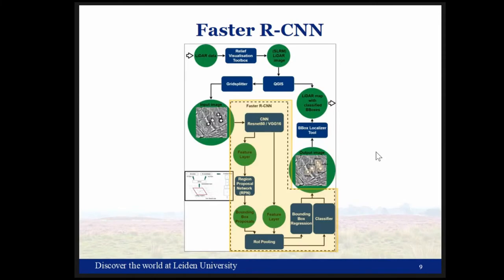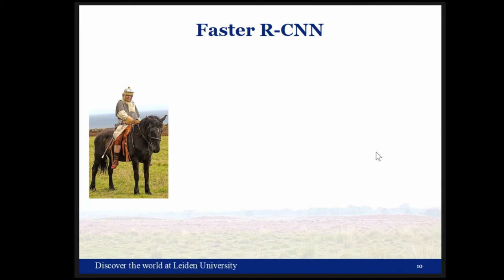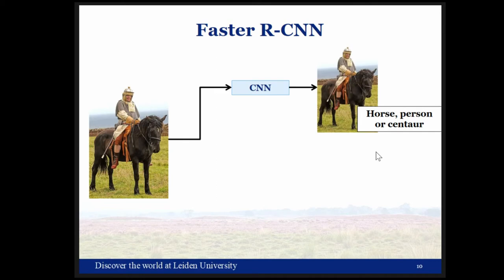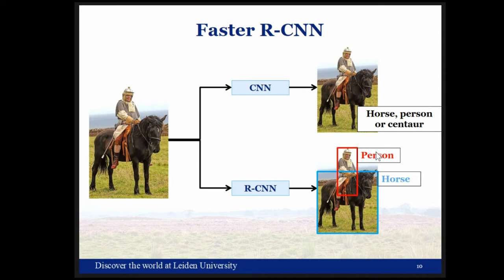After making the dataset we could start training a model. We decided from the outset to use a pre-trained CNN because of the clear advantages of transfer learning on small datasets. However, a normal CNN is an image classifier — for every input image it gives a single classification. For our project we want to detect different types of archaeology within one LiDAR image, and objects like barrows and Celtic fields might be very close together or overlapping, so a Regions with CNN (RCNN) approach was chosen.